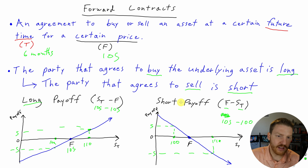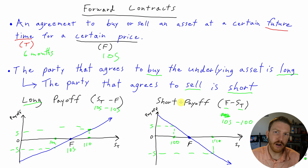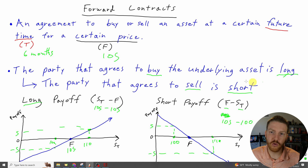Now, how would we value these payoffs or potential payoffs if the forward contract has not yet expired? What if there were three months left until the contract was going to expire?